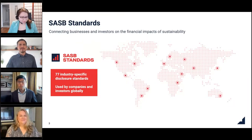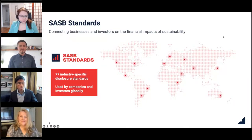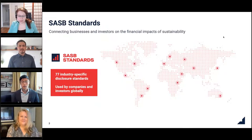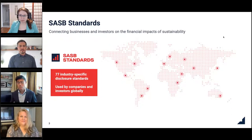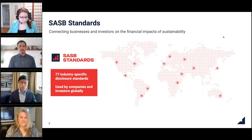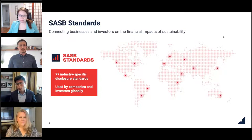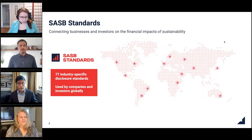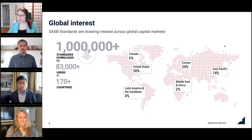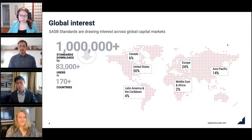Thanks everybody, and thanks for having me here. Really excited to be able to present for GOBI on this event today. I'm going to start with an overview of the SASB Standards and how you can start to think about and apply them in your work. The SASB Standards put forward 77 industry-specific disclosure standards tailored for companies to report their ESG performance to investors on the subset of sustainability issues that are likely to have a financial impact industry by industry. We've seen a wide range of adoption globally — we started in the States but have grown very quickly and have seen significant uptake around the globe, particularly in Europe and Asia as well as developing markets over the past few years. We recently reached the significant benchmark of 1 million standards downloaded.